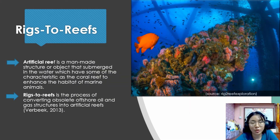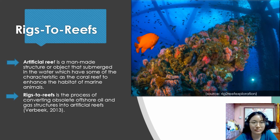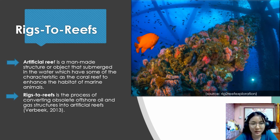I believe we all know what a coral reef is, but how about an artificial reef? An artificial reef is a man-made structure or object that is submerged in the water which has some of the characteristics of a coral reef, whereby rigs-to-reef is the process of converting offshore oil and gas structures into artificial reefs.